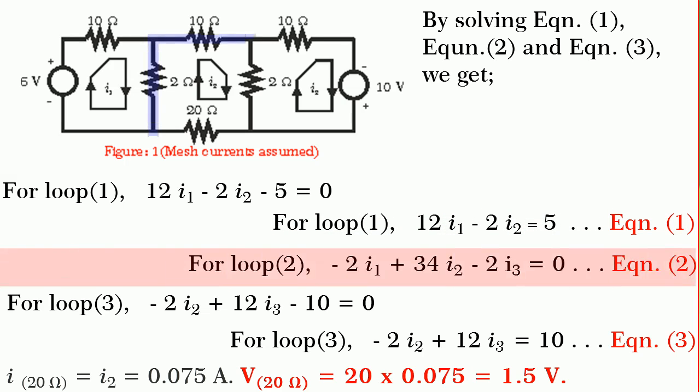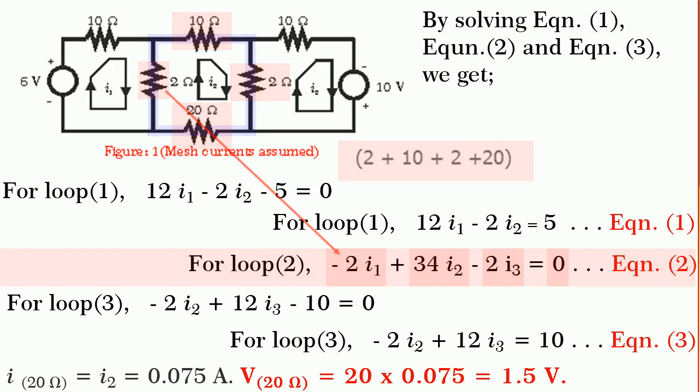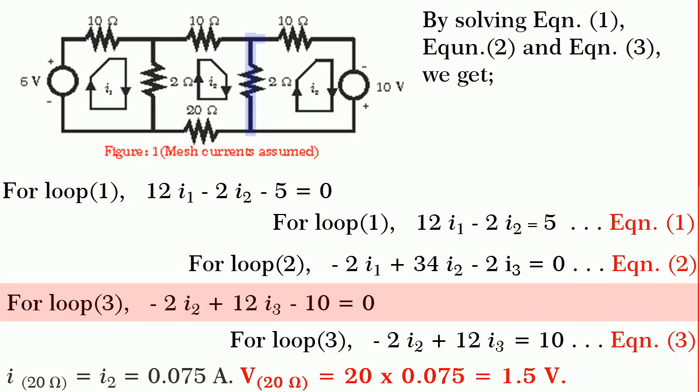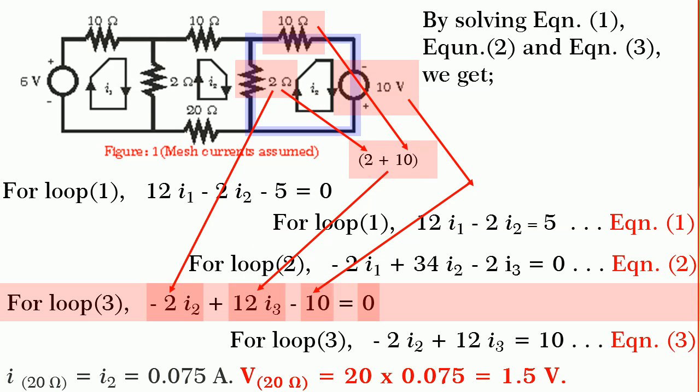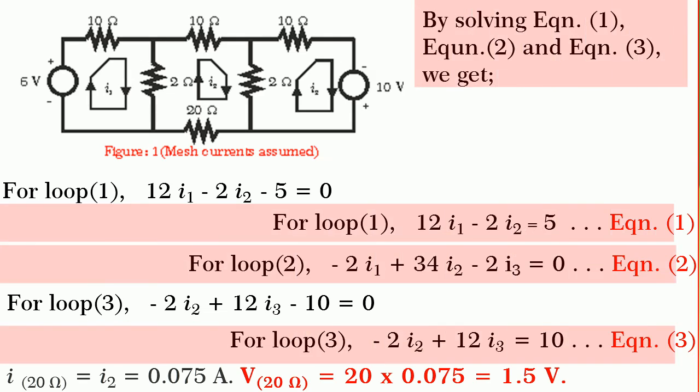Similarly, for loop 2, we get minus 2 i1 plus 34 i2 minus 2 i3 is equal to 0. Let it be equation 2. For loop 3, we get minus 2 i2 plus 12 i3 minus 10 is equal to 0. By rearranging it, we get equation 3.